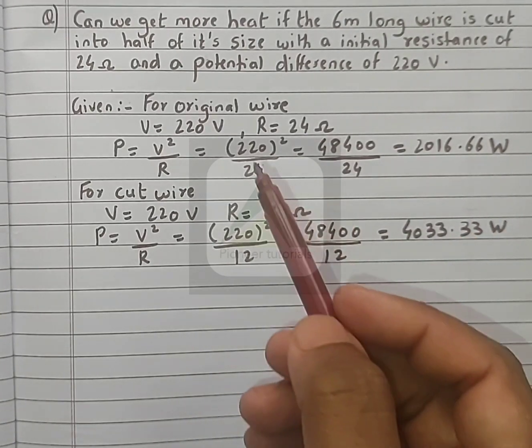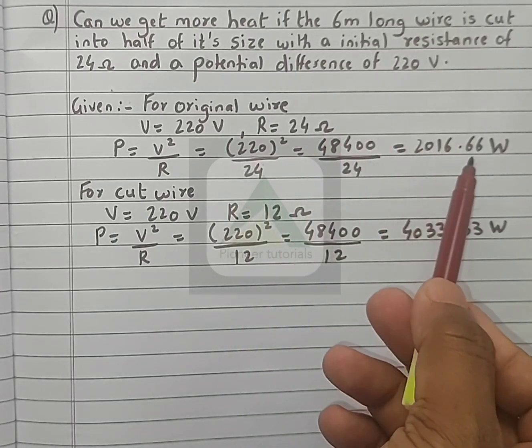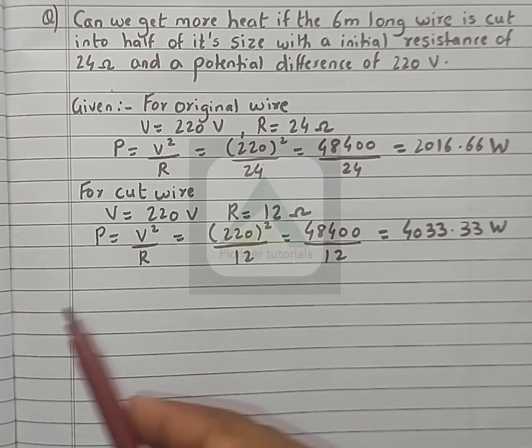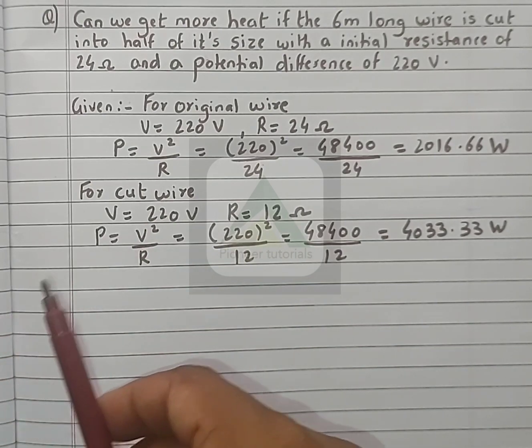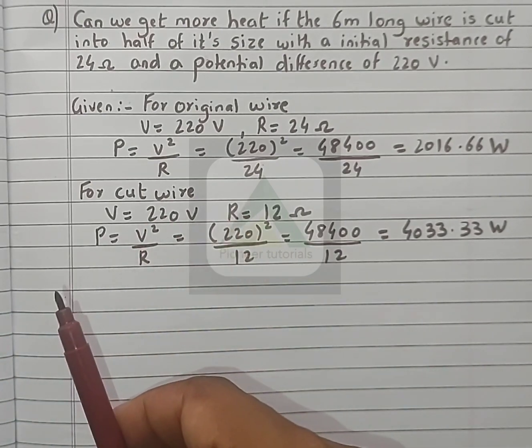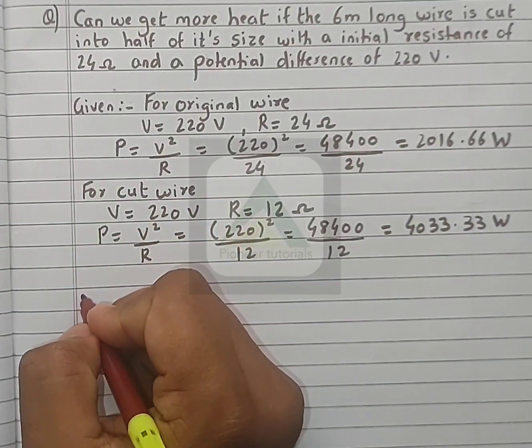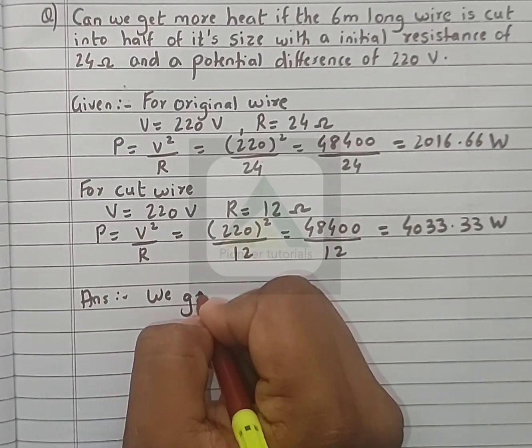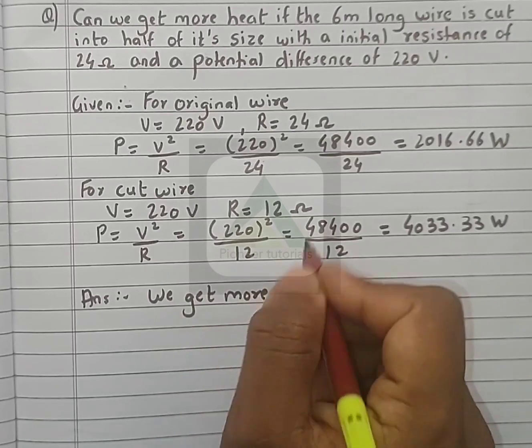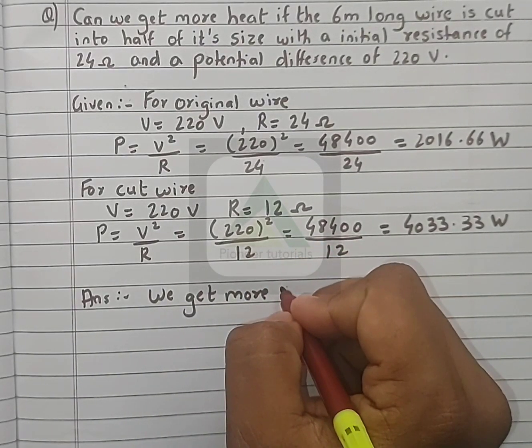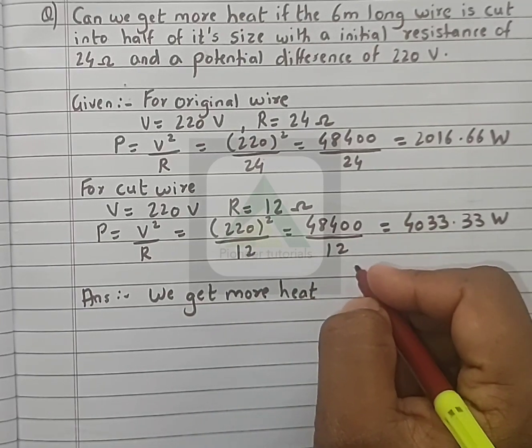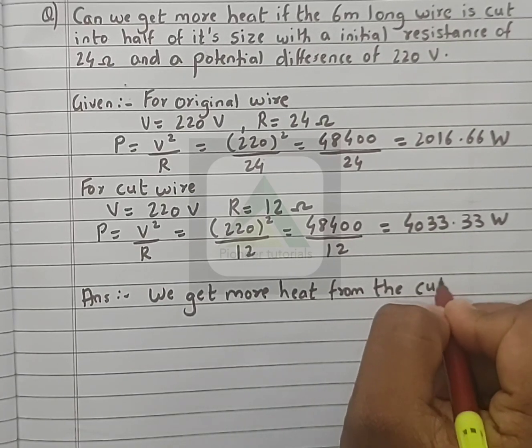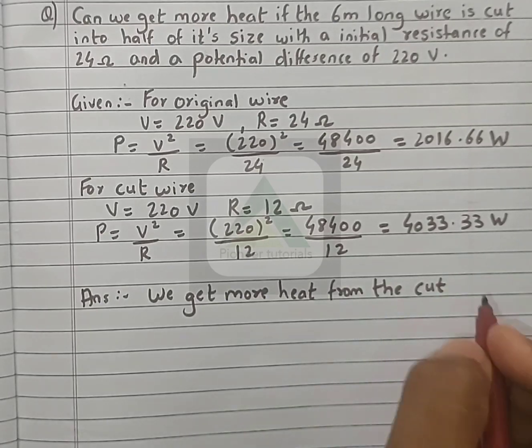So check now: original wire gives 2016.66 watts, whereas cut wire gives 4033.33 watts. Which is more? Cut wire. This means we get more heat from the cut wire.